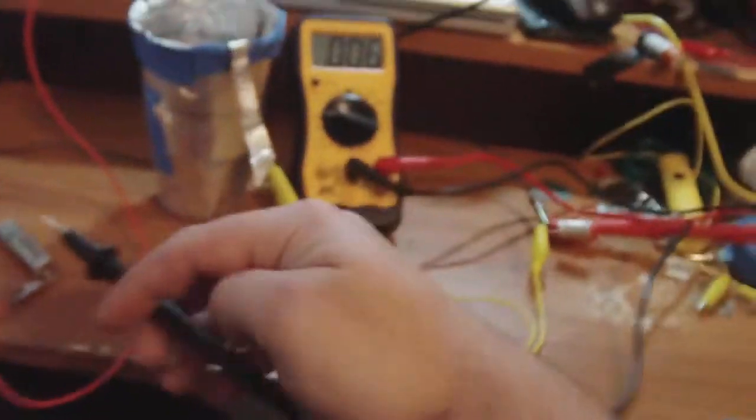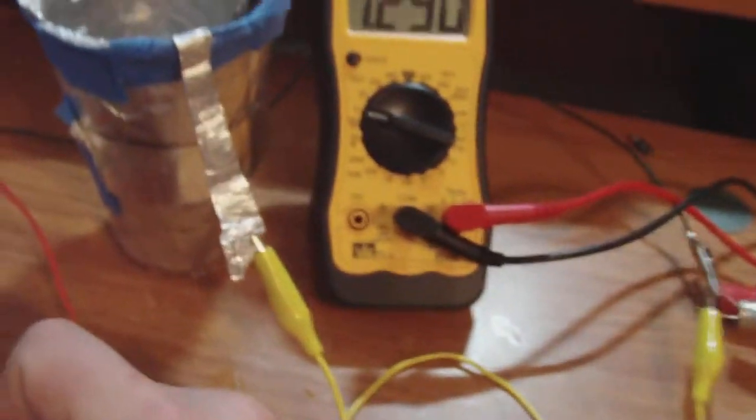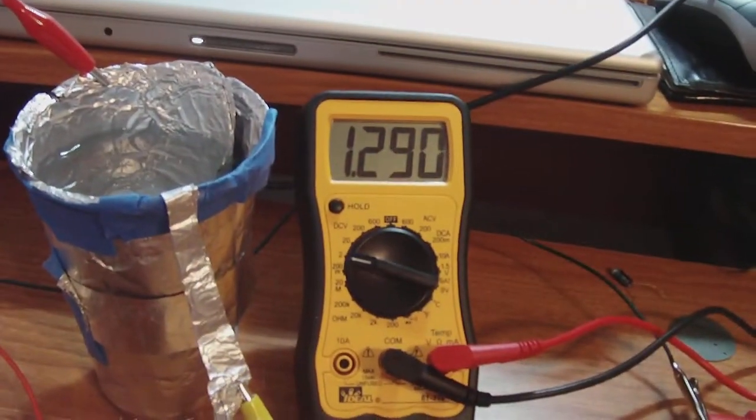I'm going to show you guys the voltage inside of this double-A battery itself is 1.290.